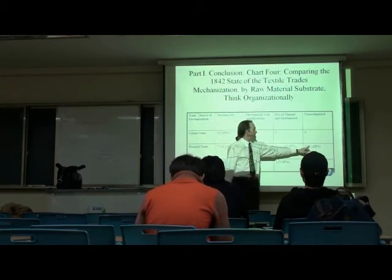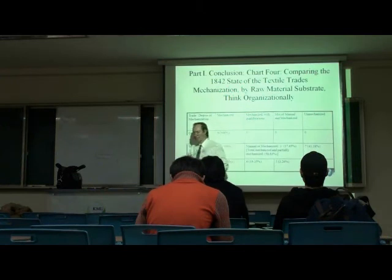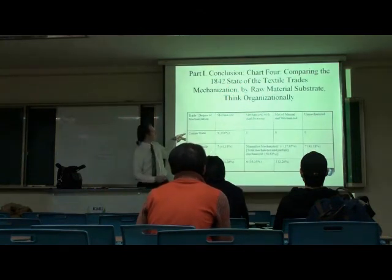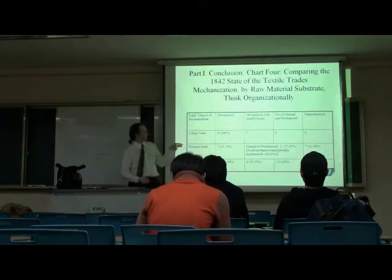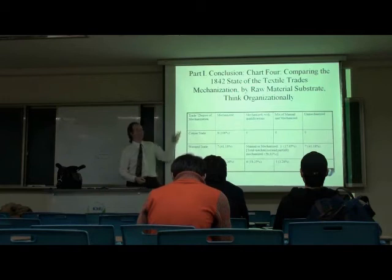And, you know, 7%, 41% is totally unmechanized. People still needed labor. And this is the same era, 1842, 1842. Only cotton is consolidated.